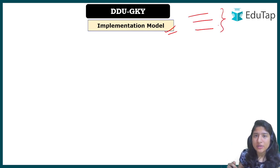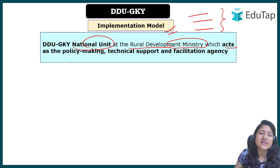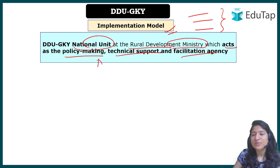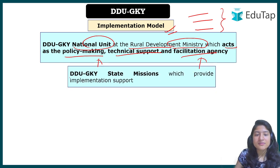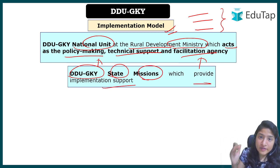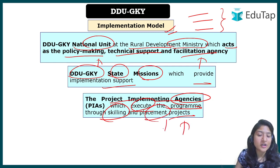The implementation model has three levels. At the national level, the National Unit under the Ministry of Rural Development handles policymaking and technical support. At the state level, the DDU-GKY State Mission provides implementation support. At the ground level, the Project Implementation Agency (PIA) executes the program through skill and placement projects.